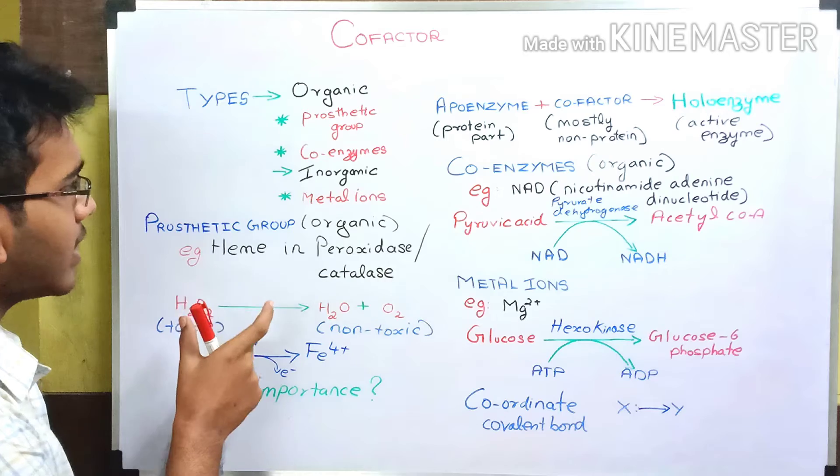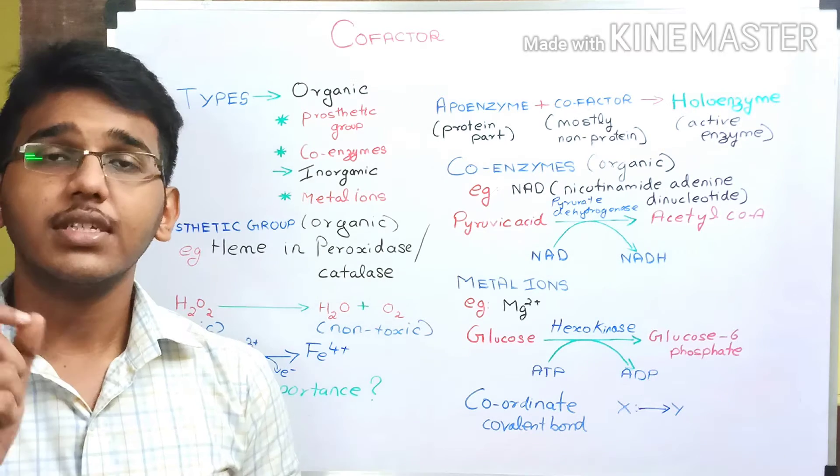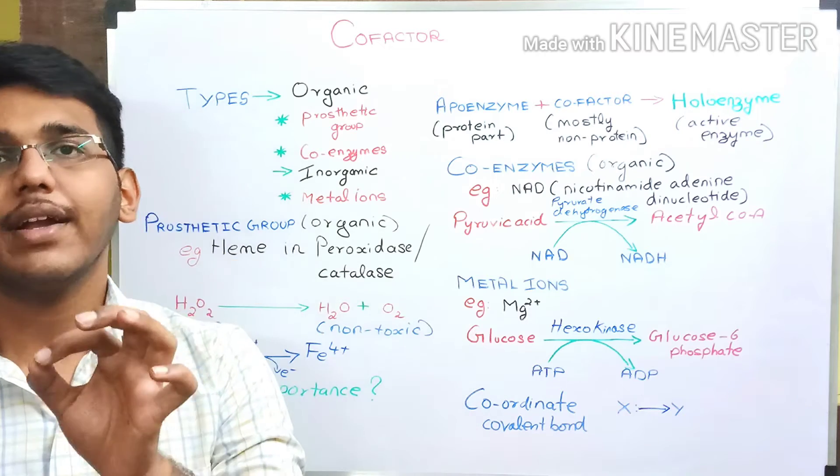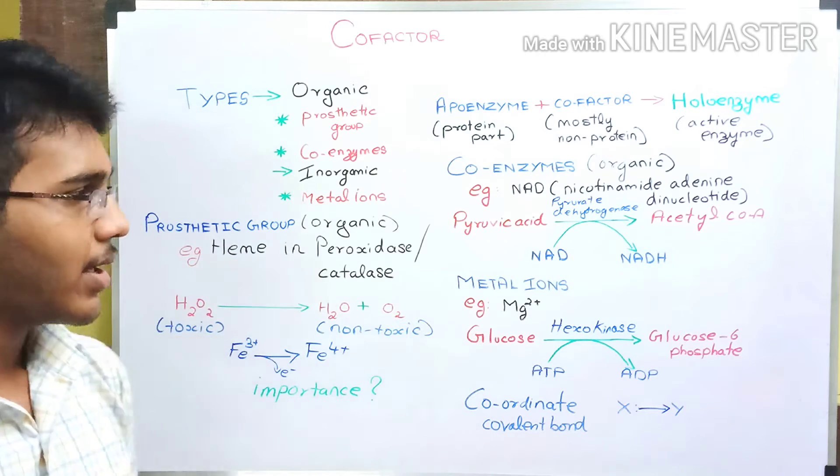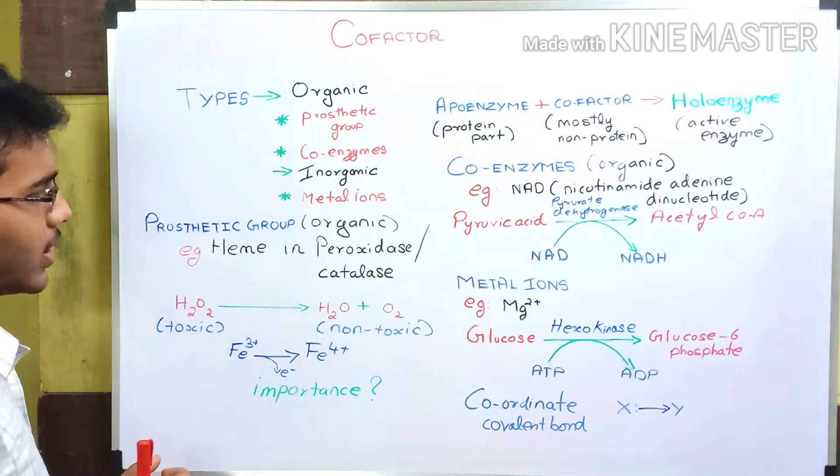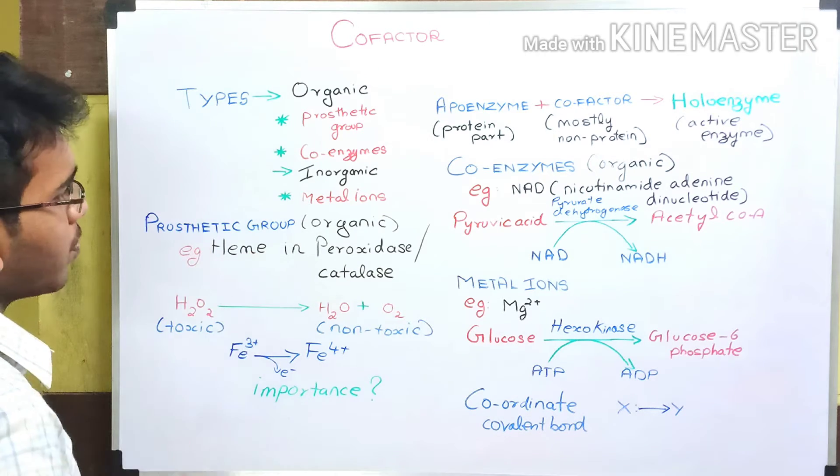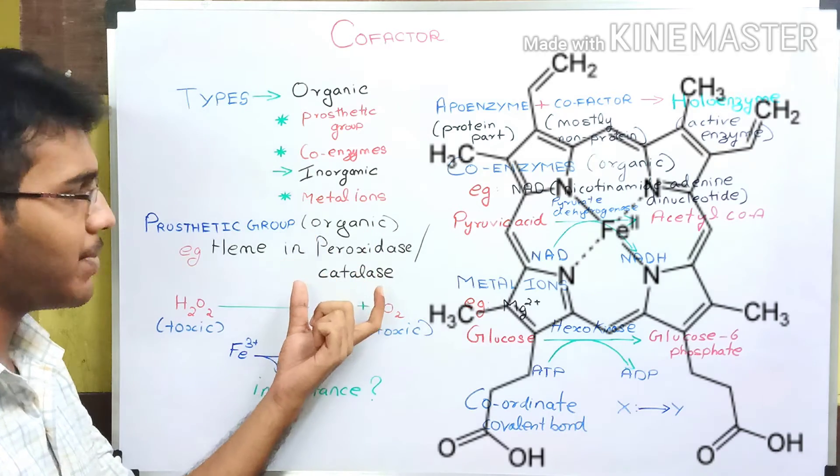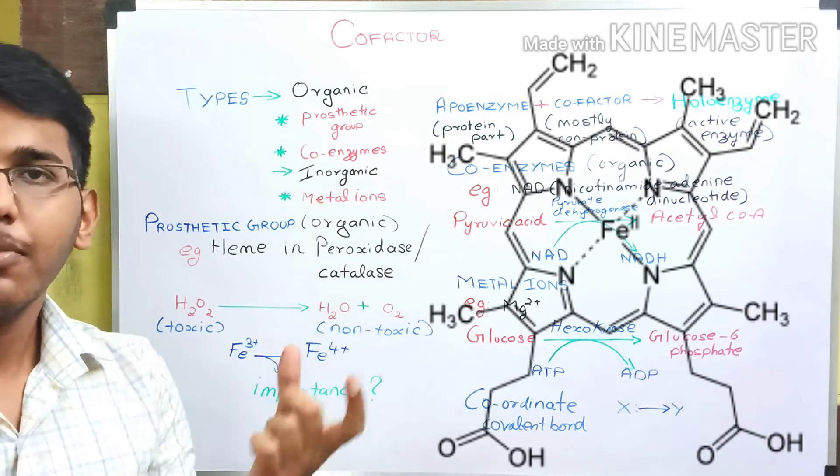A prosthetic group is an organic compound which is tightly bound to the enzyme and thus activating that particular enzyme. Here we have an example for this prosthetic group: the heme group. This heme group present in peroxidase and catalase enzyme is an example for prosthetic group.